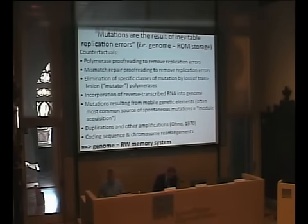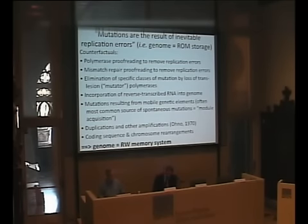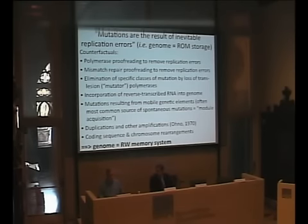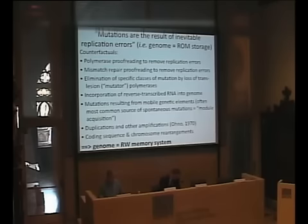Mutations are the result of inevitable replication errors — this is the basis of the idea that the genome is a read-only memory. We know that polymerase and mismatch repair proofreading mechanisms remove spontaneous errors by four to five orders of magnitude. We also know that if we get rid of certain specific mutator polymerases or lesion bypass polymerases, we can actually severely reduce, perhaps eliminate, specific classes of point mutations. So they're really the action of cell molecules, not accidents in many cases.